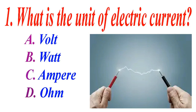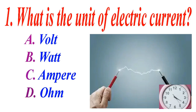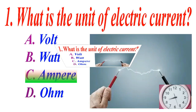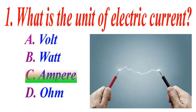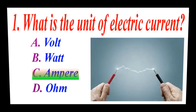What is the SI unit of electric current? A volt, B watt, C ampere, D ohm. The correct answer is C ampere.